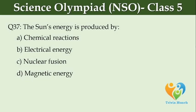The sun's energy is produced by dash. Option A, chemical reactions. Option B, electrical energy. Option C, nuclear fusion. Option D, magnetic energy.